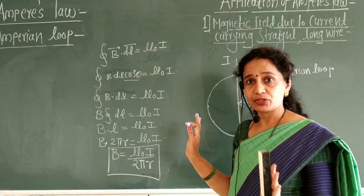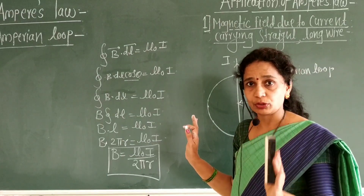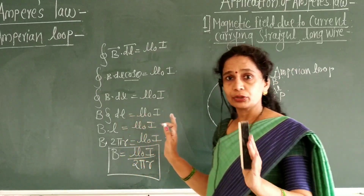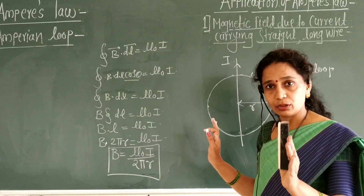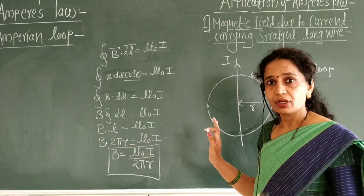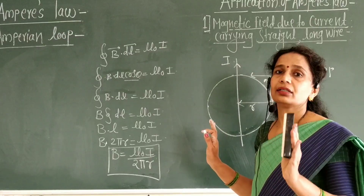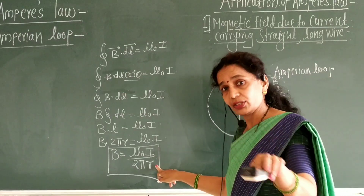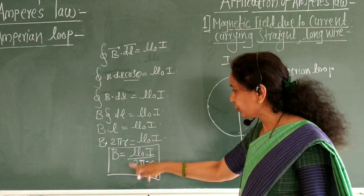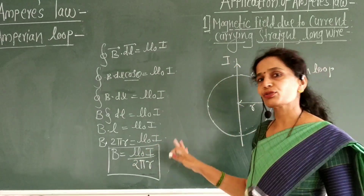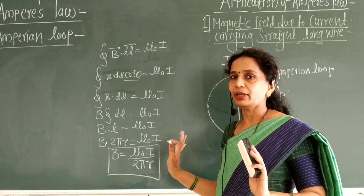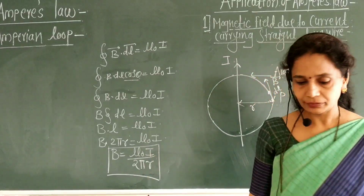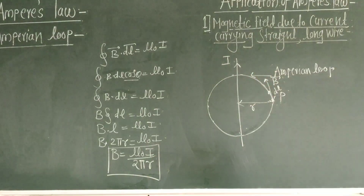This is the application to obtain an expression for the magnetic field due to a straight long wire carrying current I. Note that Biot-Savart law gives the same value, and Ampere's law also gives the same value B = μ₀I / 2πR.